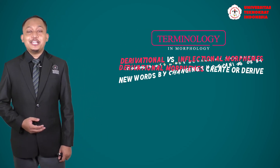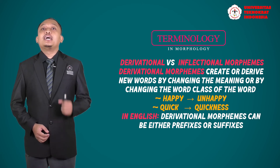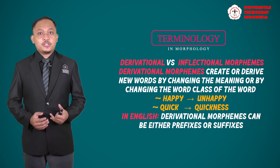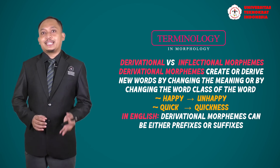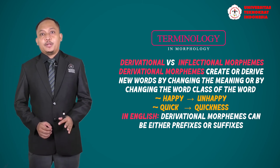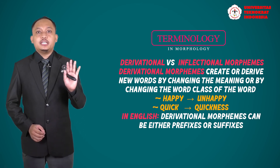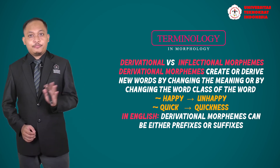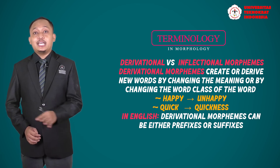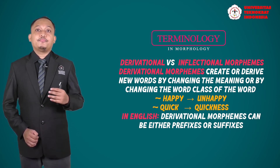Now we move to the second part: derivational and inflectional morphemes. Derivational morphemes are morphemes that can change the meaning of a word or change its part of speech. For example, the word 'dark' is an adjective; when we add the suffix '-ness,' it becomes 'darkness,' and the category changes from adjective to noun.